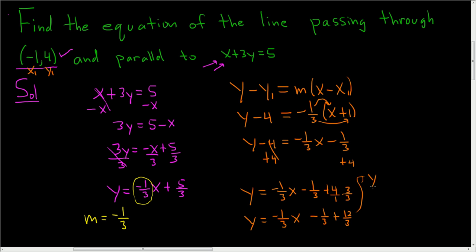So this is y equals negative 1 third x. And then we just add negative 1 plus 12 is 11, so plus 11 over 3. And that is the final answer. I hope this helps.